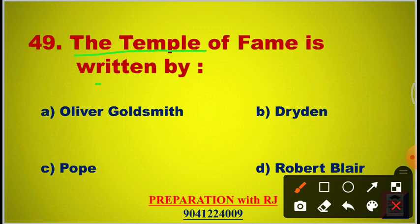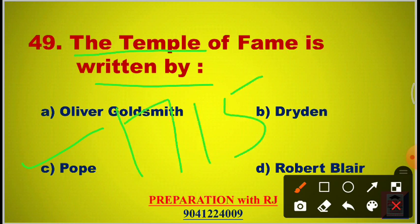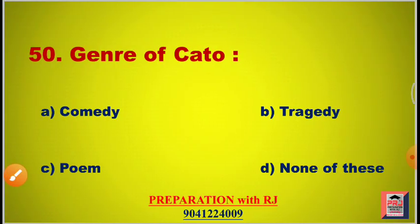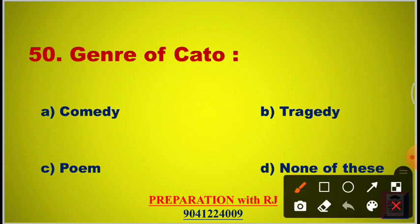Question 49: The Temple of Fame is written by — options are Oliver Goldsmith, Dryden, Pope, Robert Blair. The answer is C, Pope, published in 1715. Question 50: The genre of Cato — options are comedy, tragedy, poem, none of these. The answer is B, tragedy, by Addison.